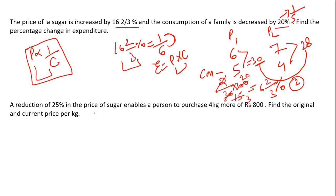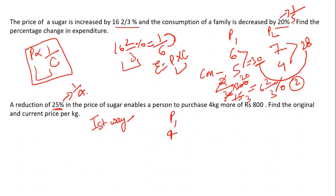Next question: a reduction of 25 percent in the price of sugar enables a person to purchase 4 kg more for ₹800. Find the original and current price per kg. There are two methods — let's discuss the first approach. 25 percent = 1/4, so initially price was 4 and after reduction it is 3. Since price is inversely proportional to quantity, quantity was 3 and becomes 4.